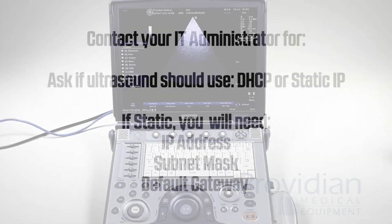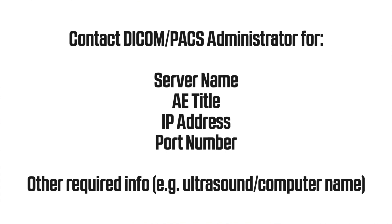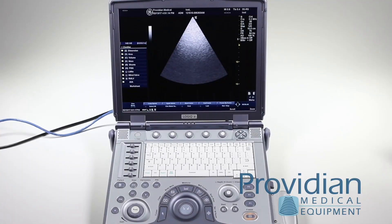Whoever is running your DICOM or PACS system needs to give you some information. This includes an AE title, an IP address, and a port number. They may also have a computer name or other specific details, but make sure you get at least those three items from the person hosting your DICOM server or PACS system.